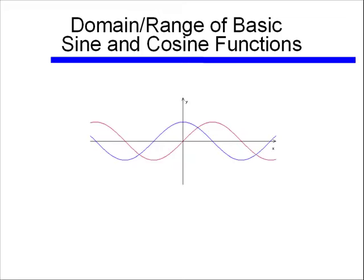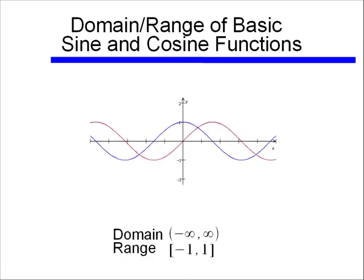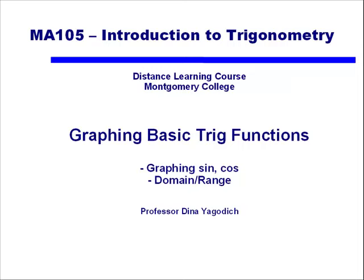Let's talk about the domain and range of sine and cosine. The domain is all possible input values — I don't see any limit, so the domain of both sine and cosine is negative infinity to positive infinity. The range, however, is limited to between negative 1 and positive 1. Since sine and cosine can exactly equal negative 1 and positive 1, the range is written with brackets: negative 1 to positive 1. And there we've graphed the basic sine and cosine functions, looked at their domain, range, and relationship to each other.